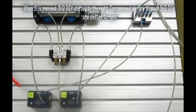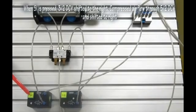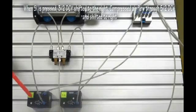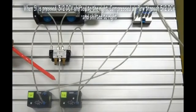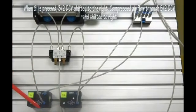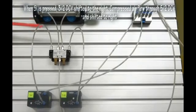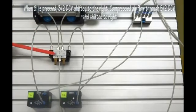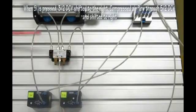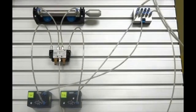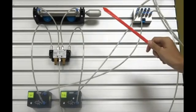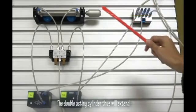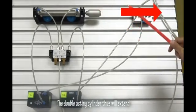When S1 is pressed, 3 2-way DCV shifted to the right. Compressed air flow through 5 2 DCV and shifted to right. The double-acting cylinder thus will extend.